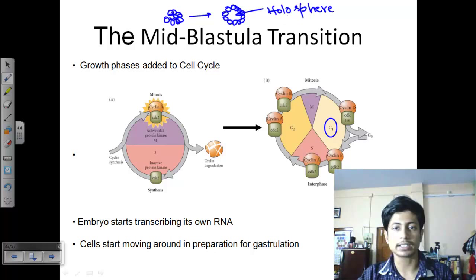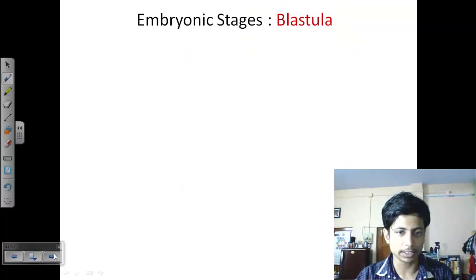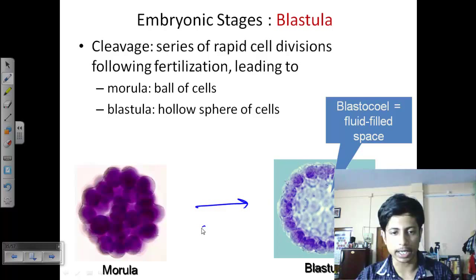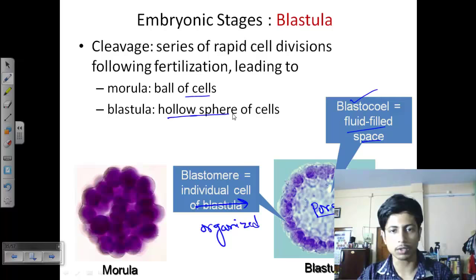This hollow sphere phase is called blastula. The cells surrounding the periphery of the blastula are termed blastomeres, and the fluid-filled cavity or space formed in the middle is known as the blastocoel. So morula is a ball of cells and blastula is a hollow sphere of cells — those are the two key terminologies.